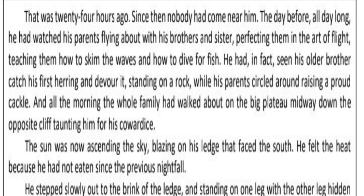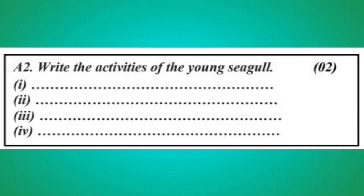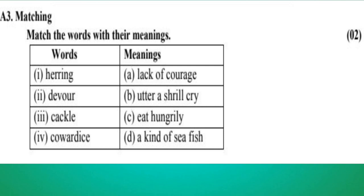A2: Write the activities of the young seagull. A3 Matching: match the words with their meanings. Words are: herring, devour, cackle, cowardice. Meanings: lack of courage, utter a shrill cry, eat hungrily, a kind of sea fish.